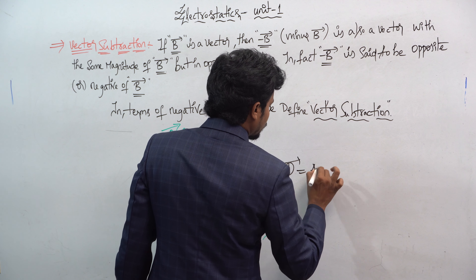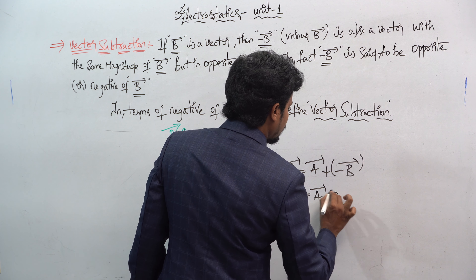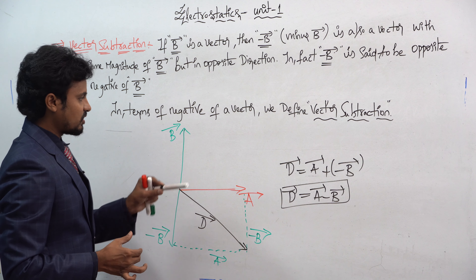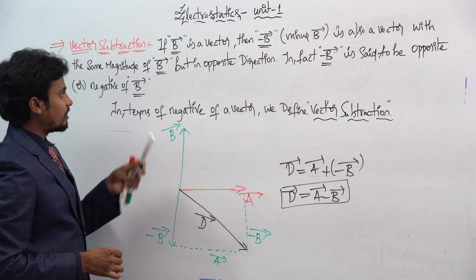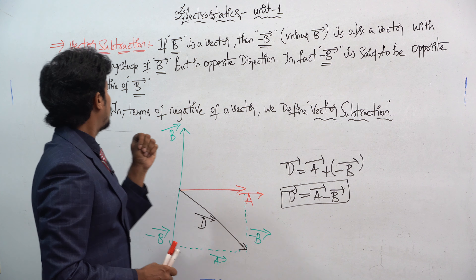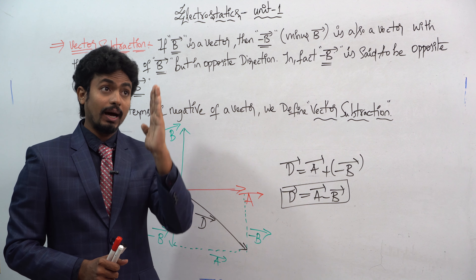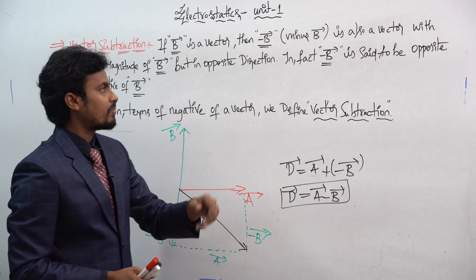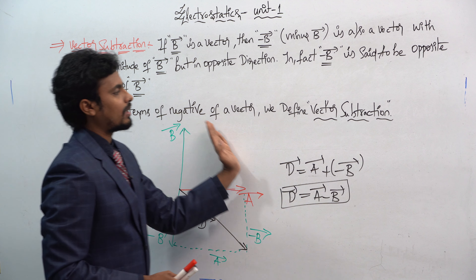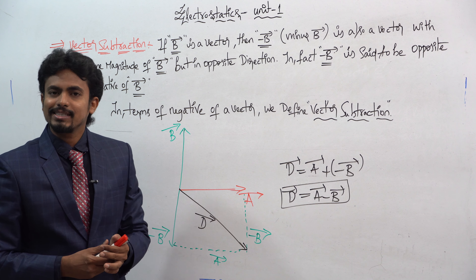d-bar is equal to a-bar plus of minus b-bar, so this becomes a-bar minus b-bar. Therefore, d-bar = a-bar minus b-bar. If b-bar is a vector, then minus b-bar is also a vector with the same magnitude but in the opposite direction. Minus b-bar is said to be the opposite or negative of b-bar. This is the definition behind vector subtraction.